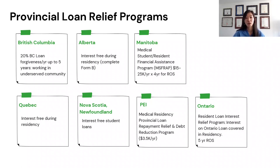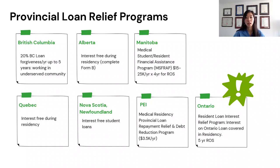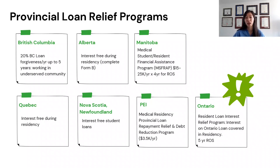If you're in Ontario, be careful about the resident loan relief program — for medical residents, it covers your interest for as long as you provide a minimum of five years of return to service in Ontario. This might be better if you're doing a five-year residency in Ontario, but if you're a family medicine resident planning to take advantage of the rural forgiveness program, you can't double-dip. Personally, I think the rural program is more worth it economically, though it depends on your loan size and specialty.